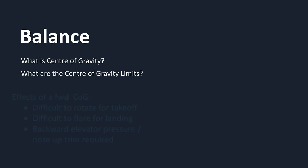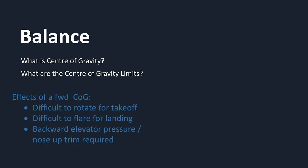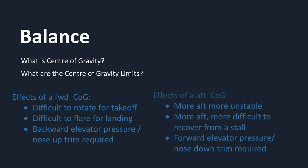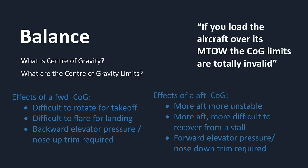A centre of gravity at the forward limit requires backward pressure on the elevator control and nose-up trim. A forward centre of gravity makes it difficult to rotate the aircraft for takeoff and difficult to flare for landing. A centre of gravity at the aft limit requires forward pressure on the elevator control and nose-down trim. An aft centre of gravity can have the tendency for the aircraft to rotate in a dangerously nose-high attitude. The further aft the centre of gravity is, the more difficult it is to recover from a stall event. It is also important to note that if the aircraft is operated above the maximum takeoff weight, the centre of gravity limits are null and void.